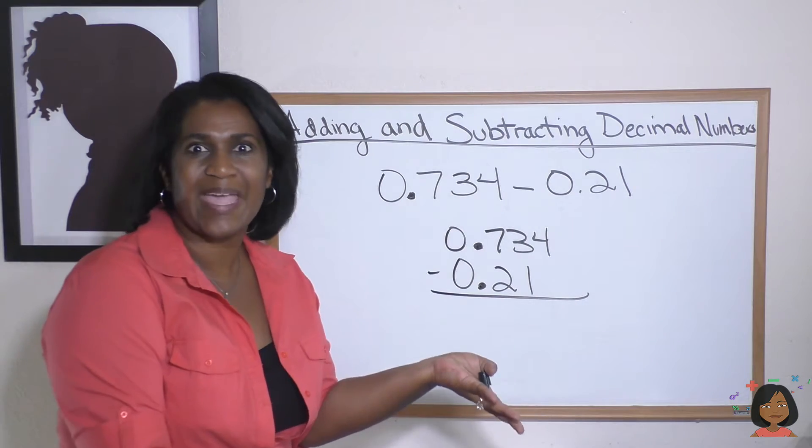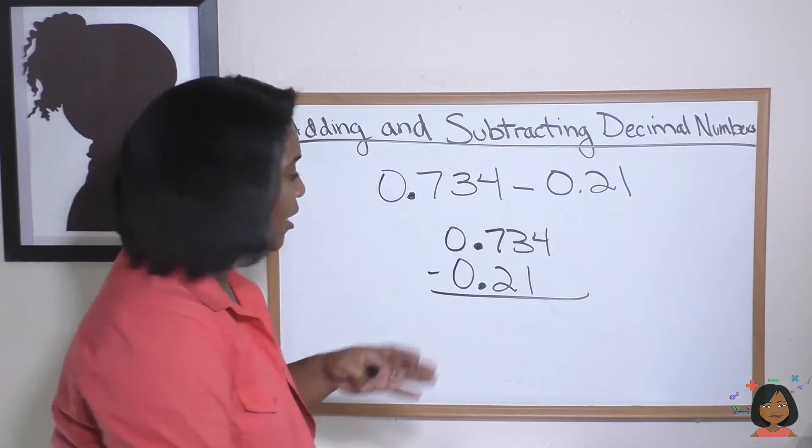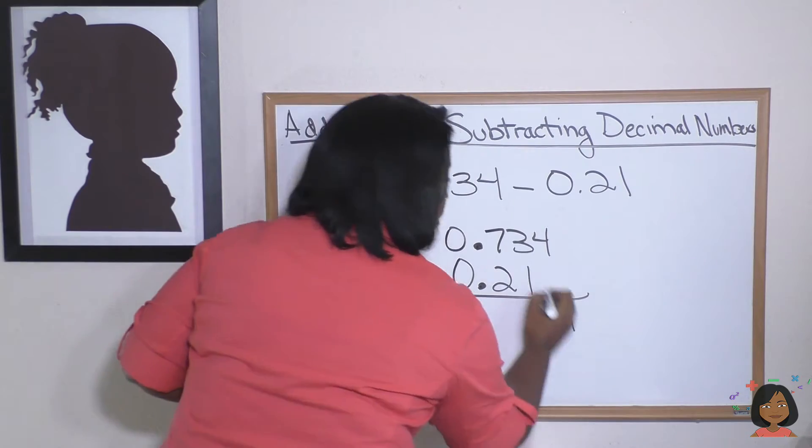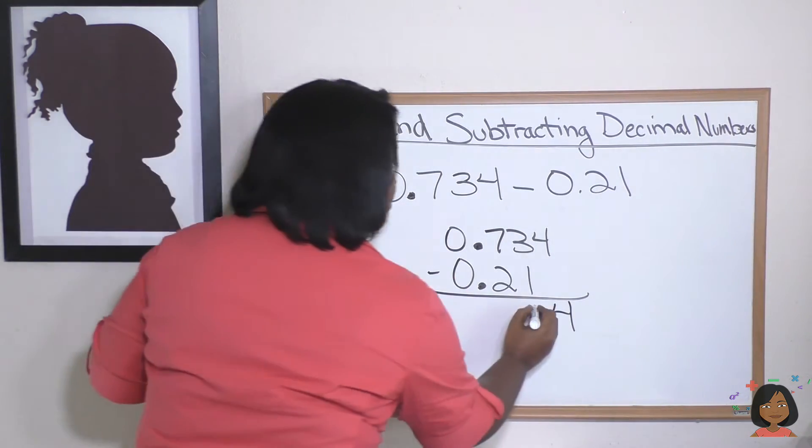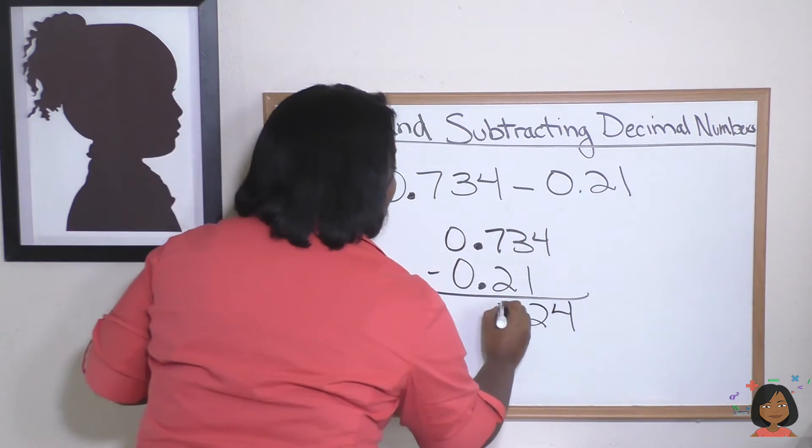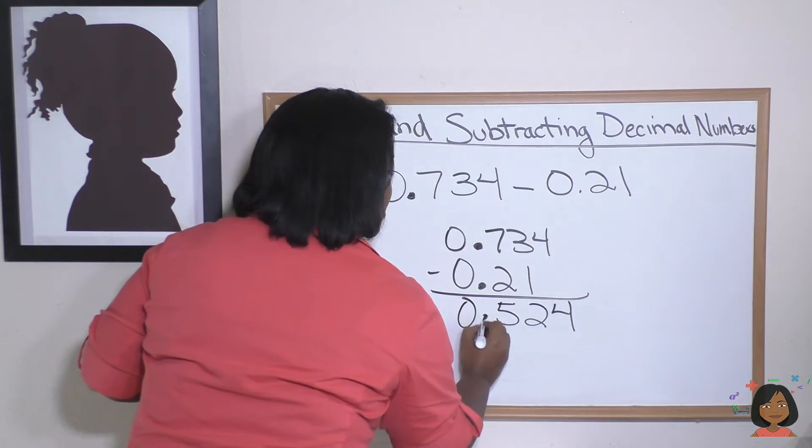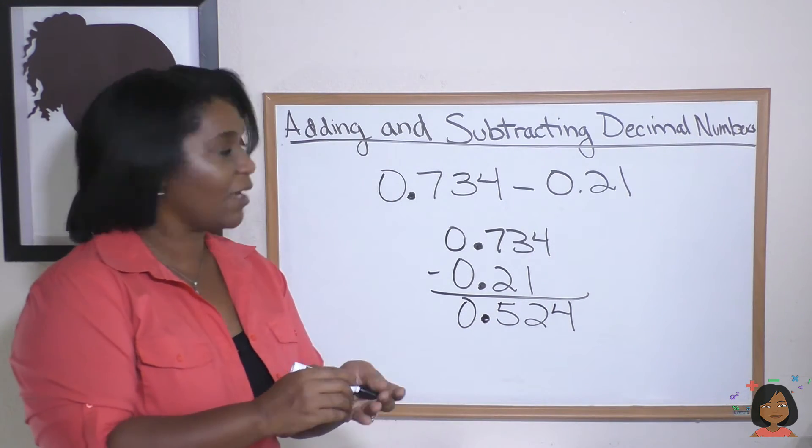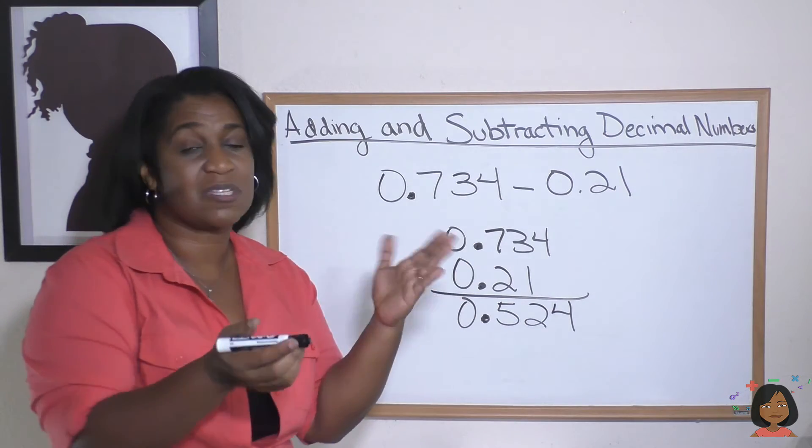Four minus nothing is four. Three minus one is two. Seven minus two is five. Zero minus zero is zero. So there you go.